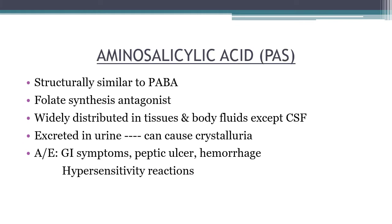Para-aminosalicylic acid (PAS) is structurally similar to PABA and is a folate synthesis antagonist — it blocks the enzyme dihydropteroate synthase. It is a bacteriostatic drug widely distributed in body tissues and fluids except CSF. It is one of the oldest anti-mycobacterial drugs, excreted in urine, and can cause crystalluria. Adverse effects include GI symptoms, peptic ulcer, and hemorrhage.